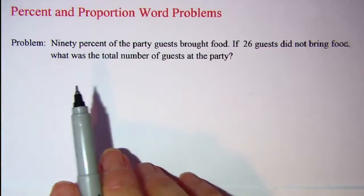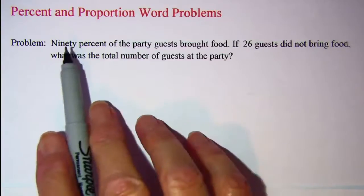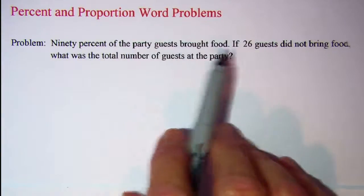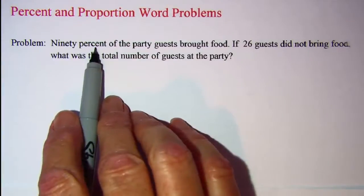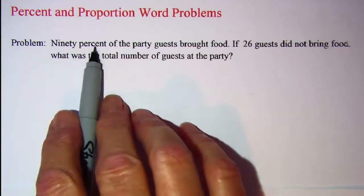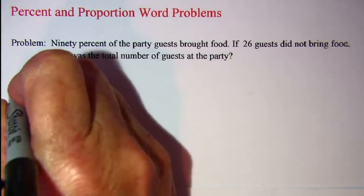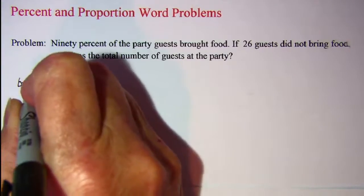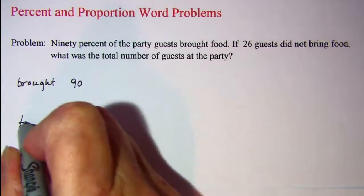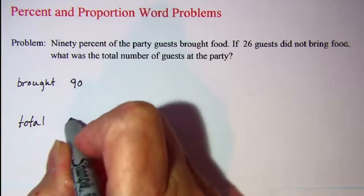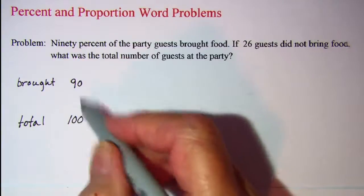One way to approach this problem is to set up proportions, so that's what I'm going to do. 90% of the party guests brought food — this percent indicates out of 100. So 90 out of 100 brought food; that's just a ratio. So we have the number that brought food as 90 and the total out of 100. That's what percent means: 90% means 90 out of 100.